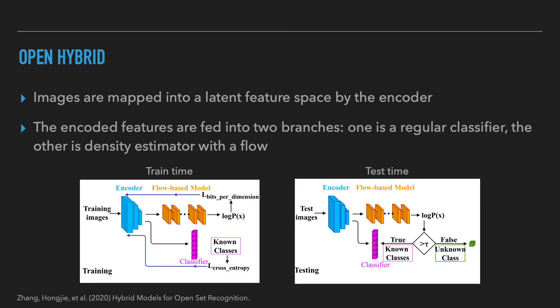Finally, we can simultaneously and jointly train the embeddings and the generative model on these embeddings. In this framework, called OpenHybrid, the encoder maps the input into latent representations which are used both for performing classification of training data and to feed a normalizing flow. During test time, if the flow assigns low likelihood to an input, we detect it as an anomaly. This method is currently one of the state-of-the-art approaches in supervised OOD detection.